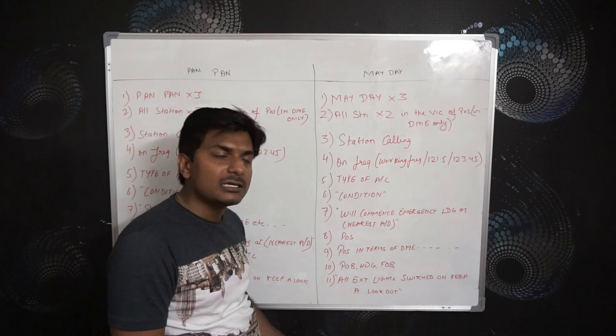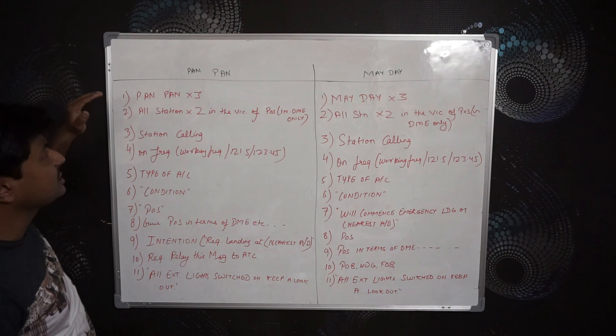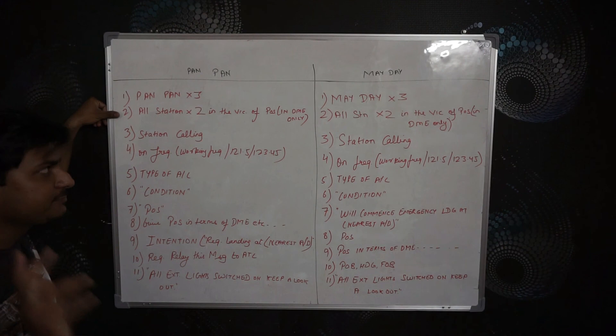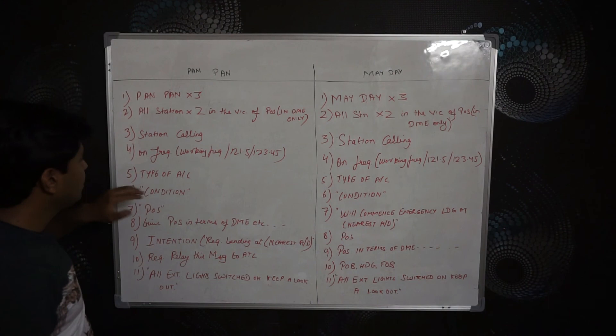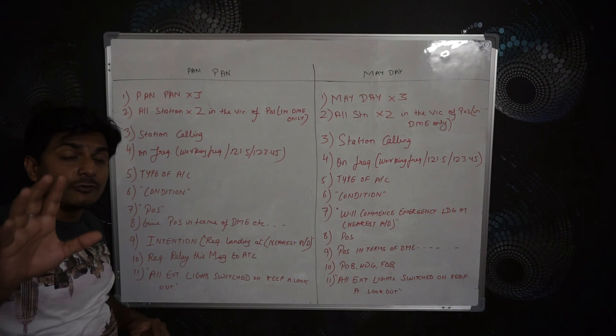Let's go to the Pan Pan situation. In Pan Pan, the first point is: Pan Pan, Pan Pan, Pan Pan. All stations, all stations, in the vicinity of position in DME only — same as Mayday. Station calling — same. On frequency — same. Working frequency, 121.5, 123.45 — same. Type of aircraft — same. Condition — same.